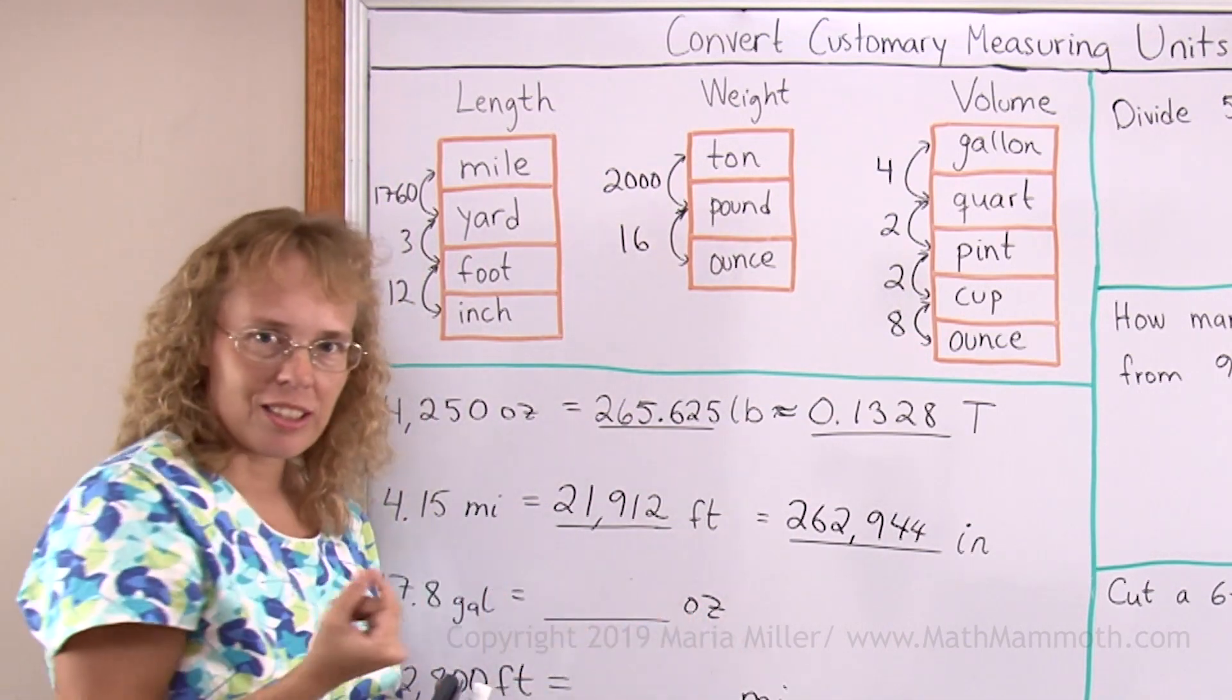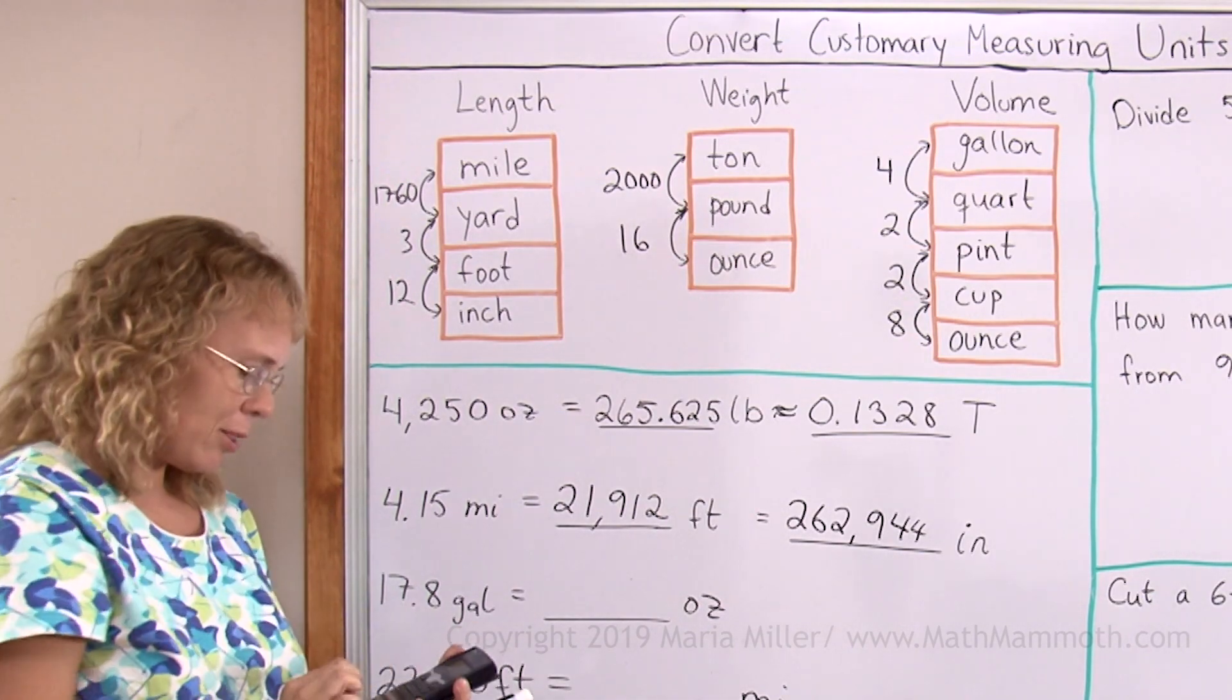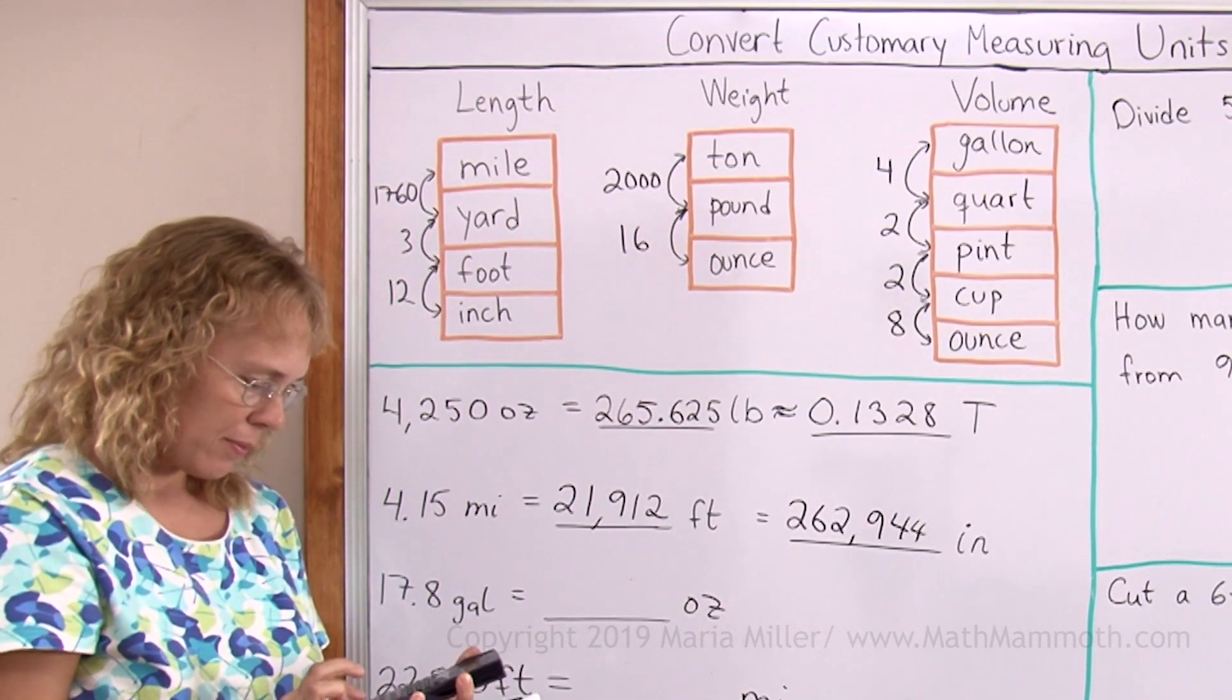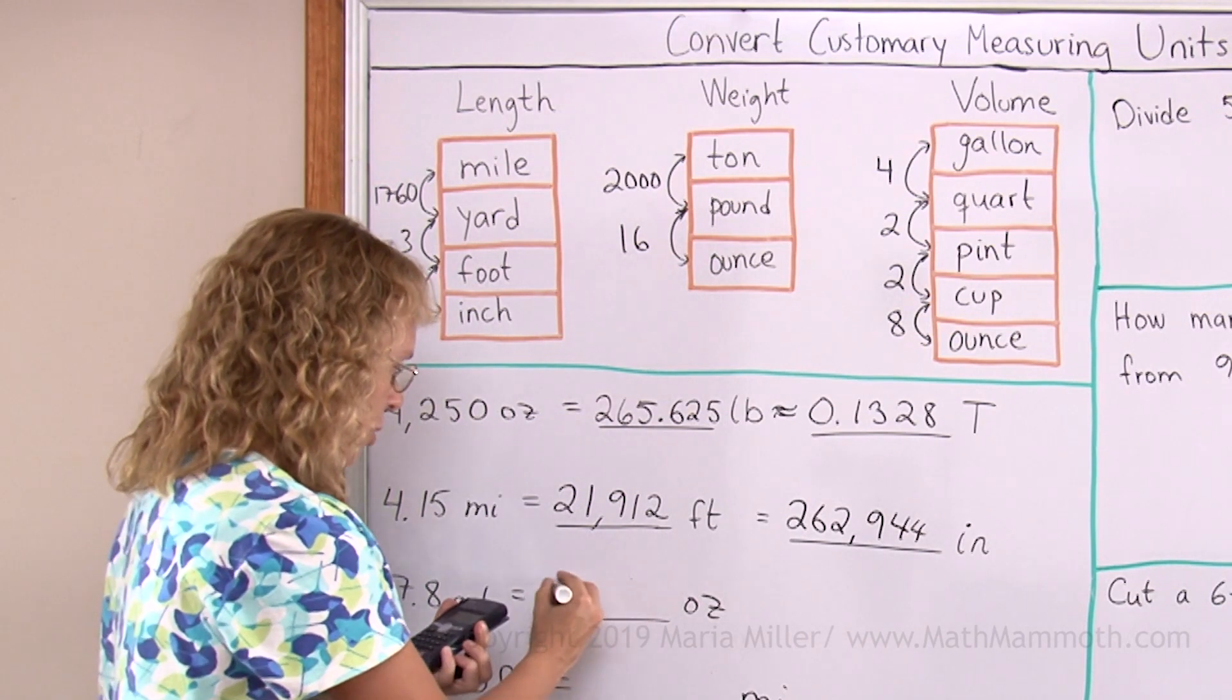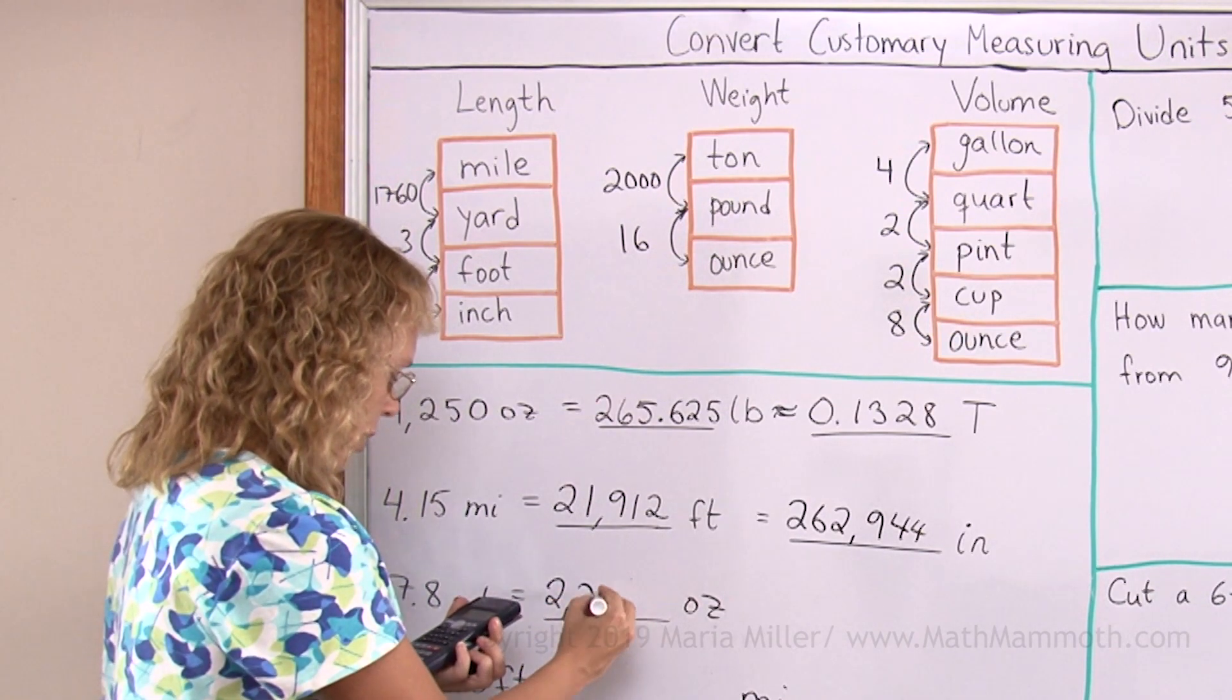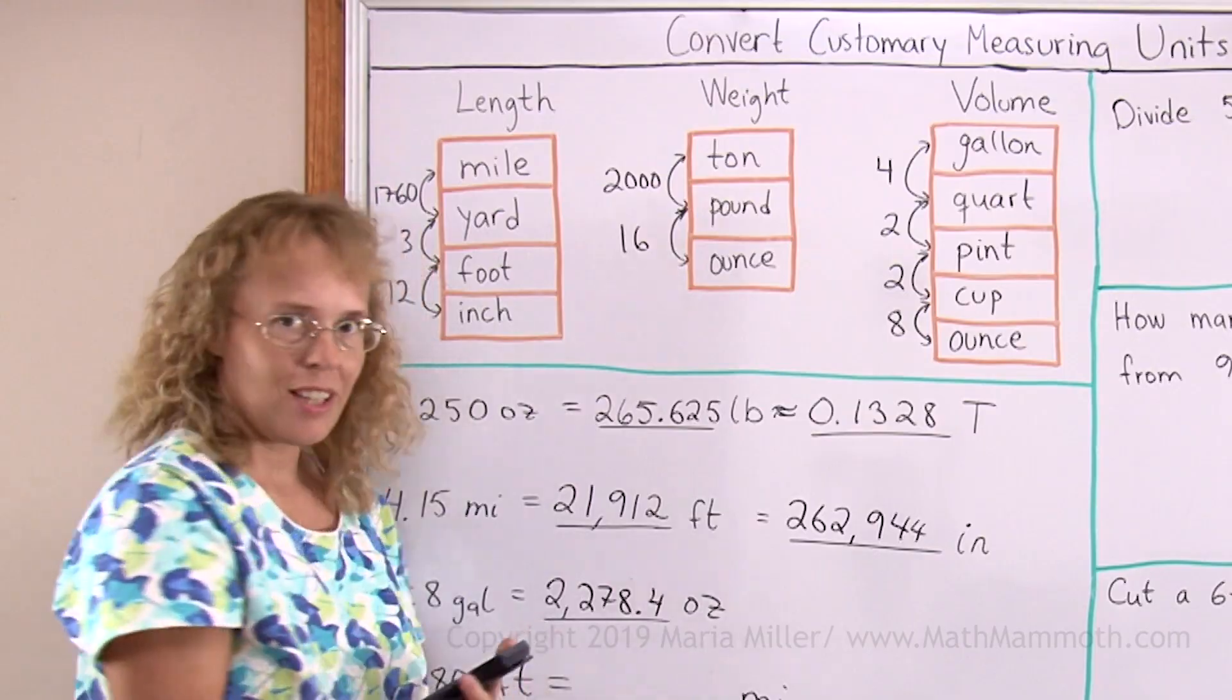Ounces are the small units, right? So you need lots of them. We need to multiply to get the bigger number. And this is 2278.4 ounces.